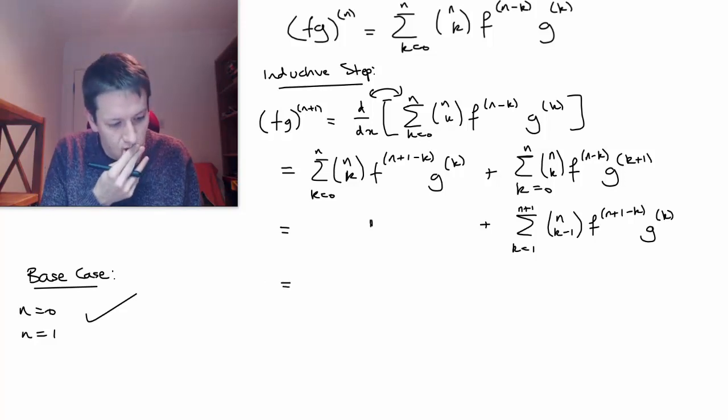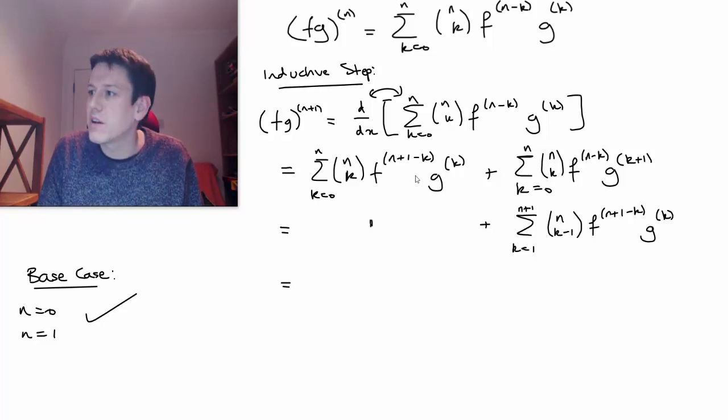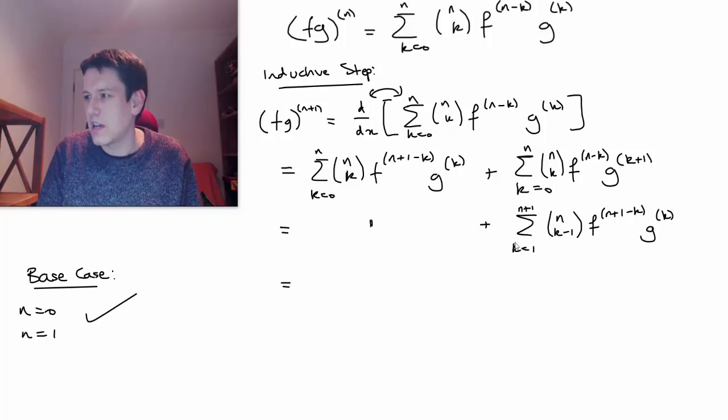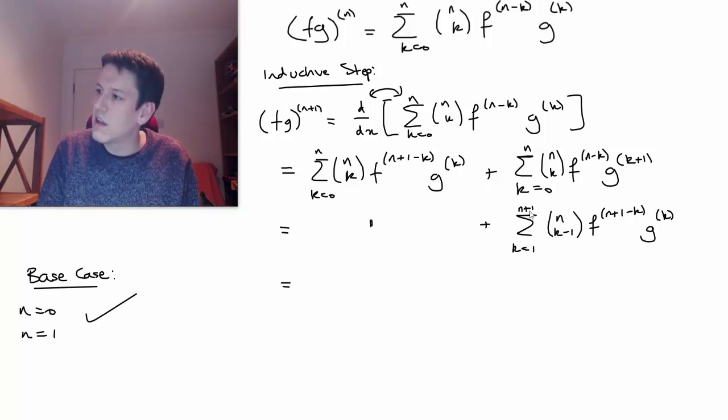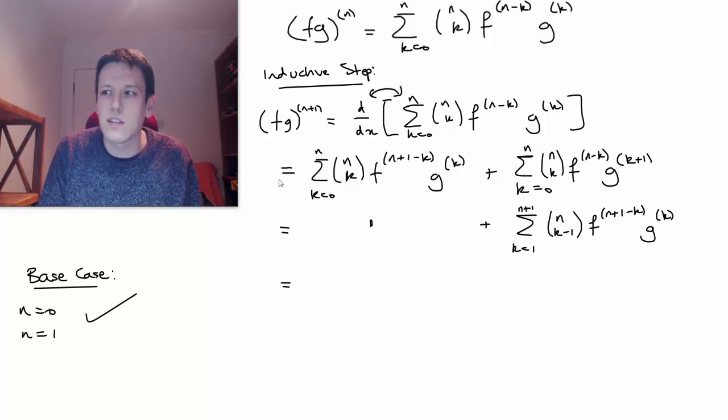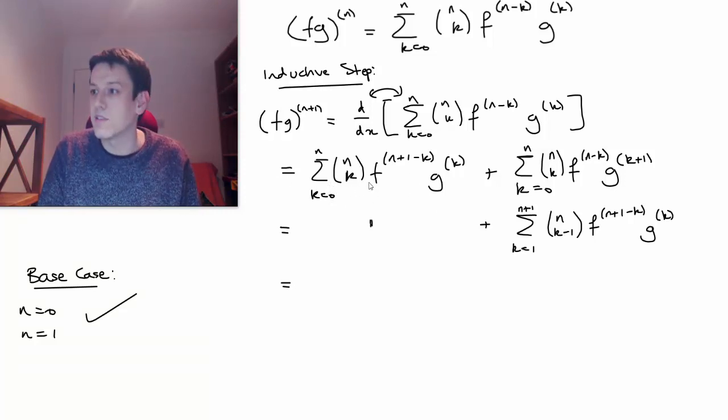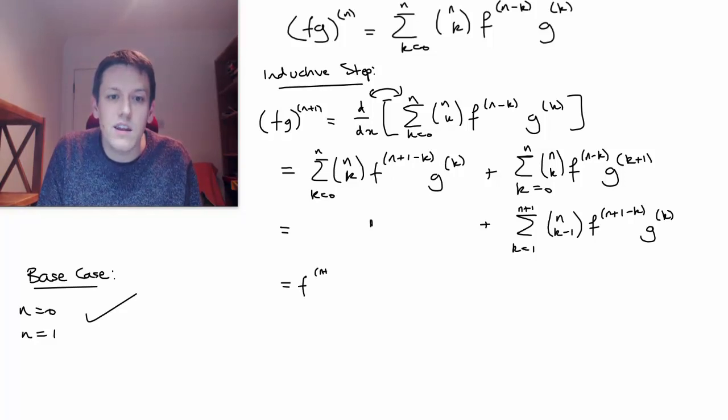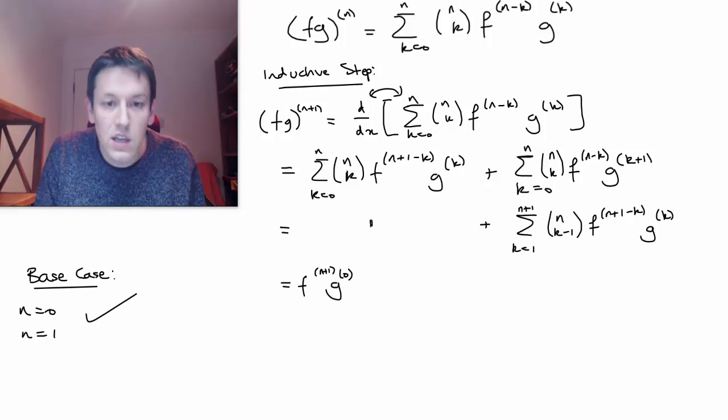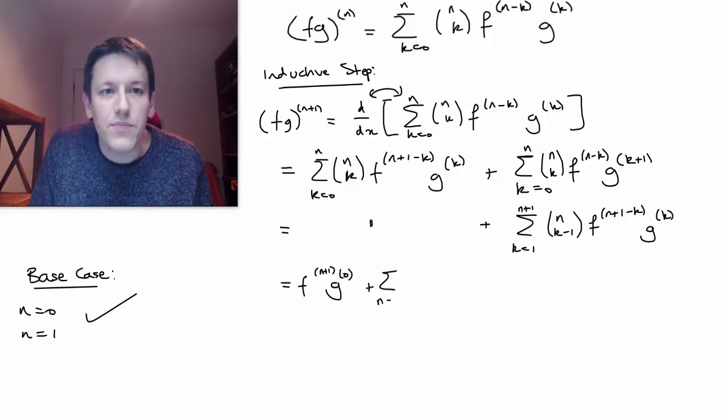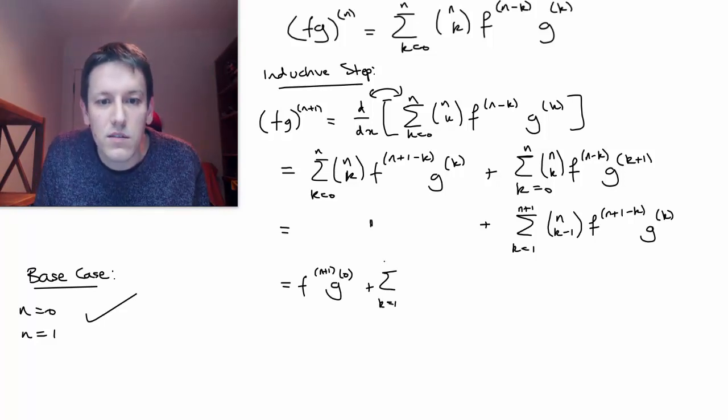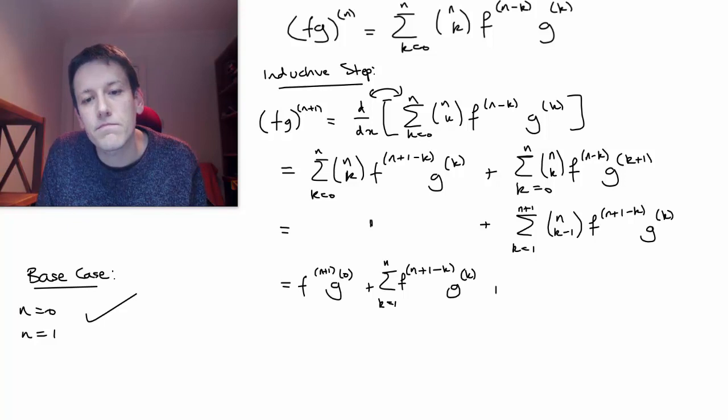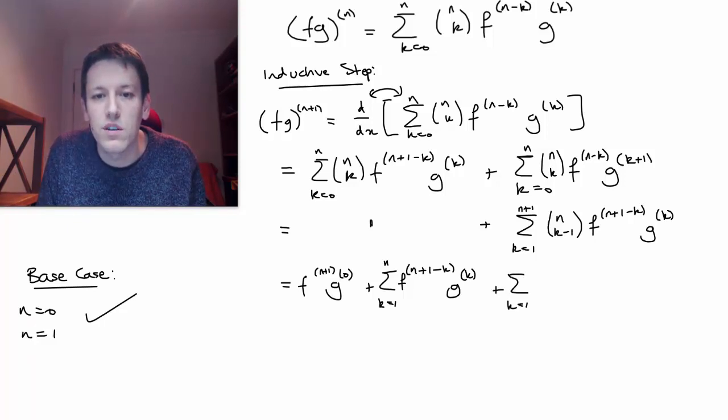Now, next step then, I'm going to try and combine these two sums together. But at the moment, they go from different values here. So I've got k equals 1 to n plus 1 and k equals 0 to n. So I'm going to take the 0th term out of the sum here. So n choose 0 is just 1. If I put k equals 0, I get an f^(n+1) and then g^0, which is just g. And then I'll have the sum from k equals 1 to n of this thing f^(n+1-k) g^(k).